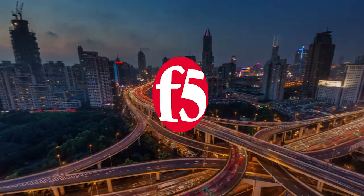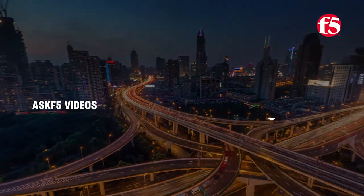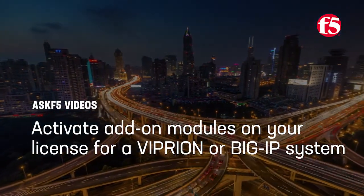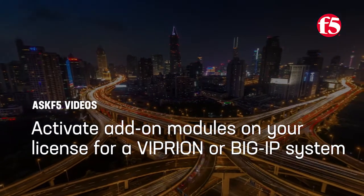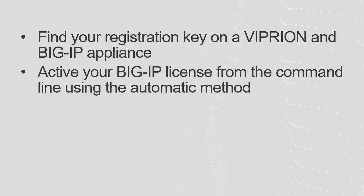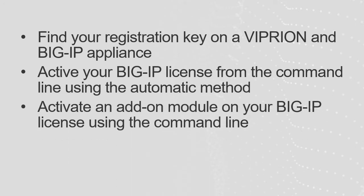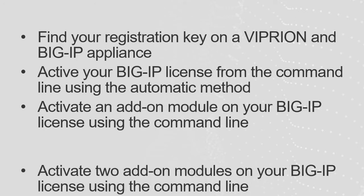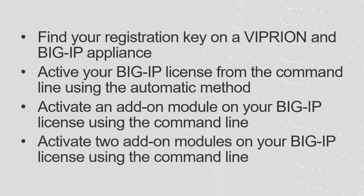Hello everyone! Today Ask F5 shows you how to activate add-on modules on your license for a Vipreon or BigIP system. This video shows you how to find your registration key on a Vipreon and BigIP appliance, activate your BigIP license from the command line using the automatic method, activate an add-on module on your BigIP license using the command line, and activate two or more modules on your BigIP license using the command line.